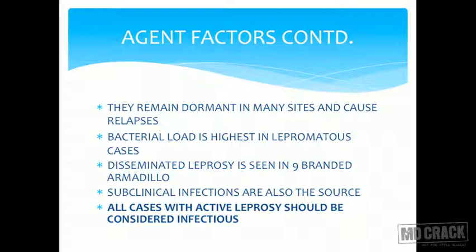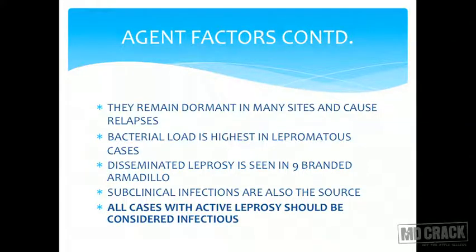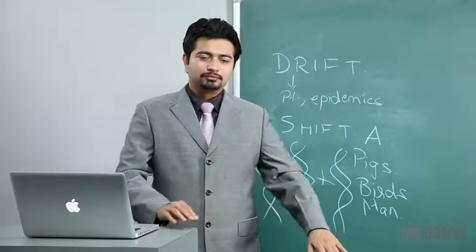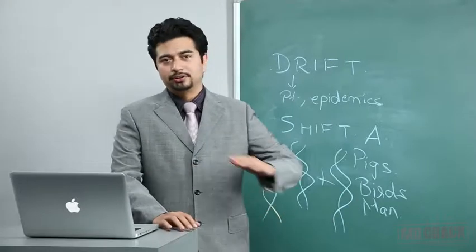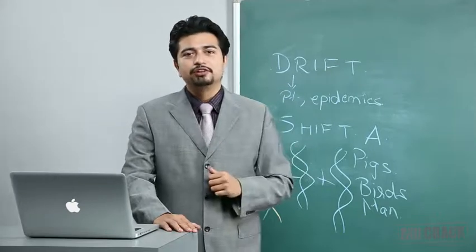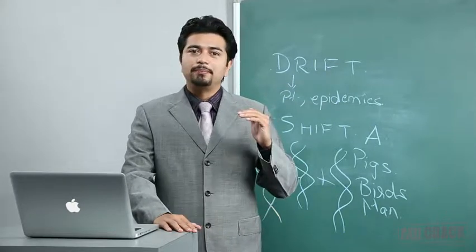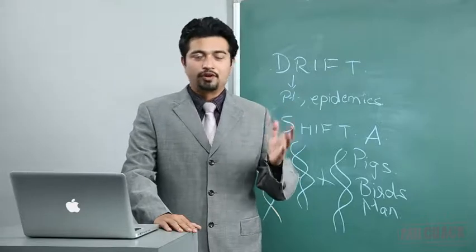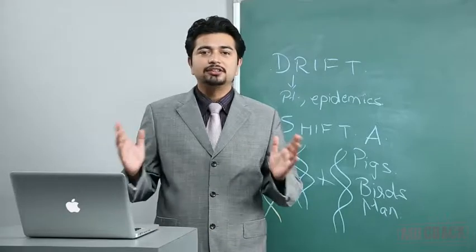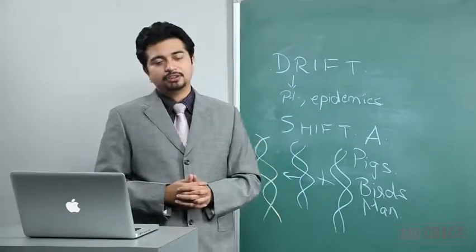Lepromatous leprosy is the worst case scenario and tuberculoid leprosy is the best case scenario — these are the two ends of the leprosy spectrum. Bacterial load is highest in lepromatous cases. Leprosy is also seen in nine-banded armadillos, and more recently confirmed in some chimpanzees and other monkey species — meaning additional animal hosts exist.